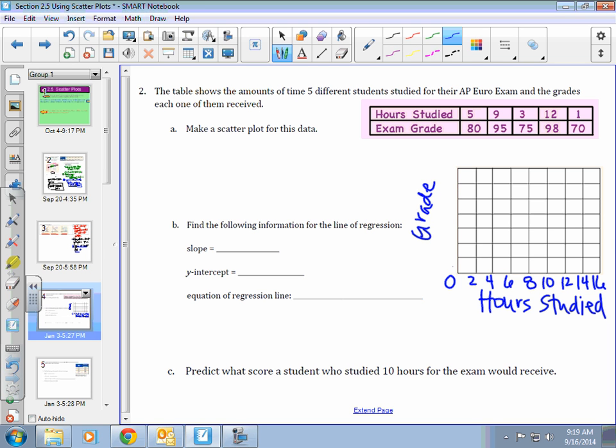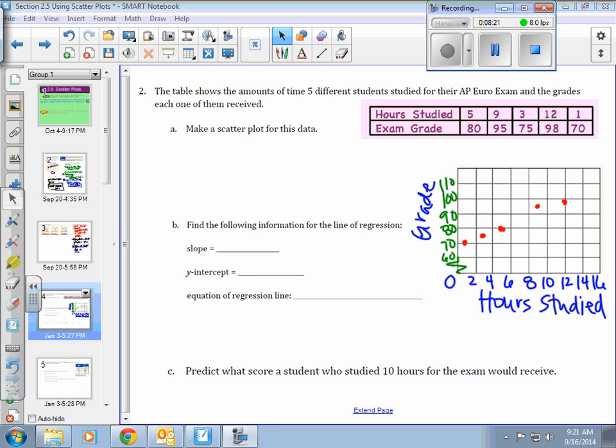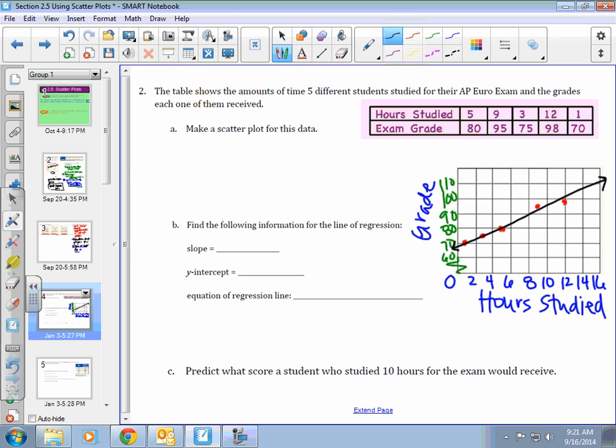For my grade, it goes from 70 up to 98. I probably don't want to start counting at zero. I probably want to start a little bit higher than that. What you need to make sure you do is put in a break. That shows that we're skipping some numbers. I'm going to label this 60. Let's go by 10s: 70, 80, 90, 100, 110. Nobody got over 100. I want you to pause the video and plot those points. Once you have those points plotted, I want you to draw in a line of best fit.